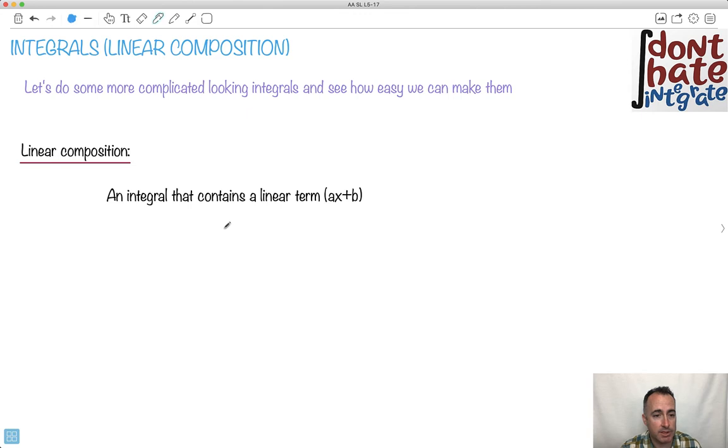So an example could be like trying to do the integral of 2X plus 3 to the power of 5, DX. Or maybe we try to do E to the power of 4X minus 1 DX. Something like this. So the trick is to not panic, just to try to look for this linear composition. This right here is going to be the key thing to look for.